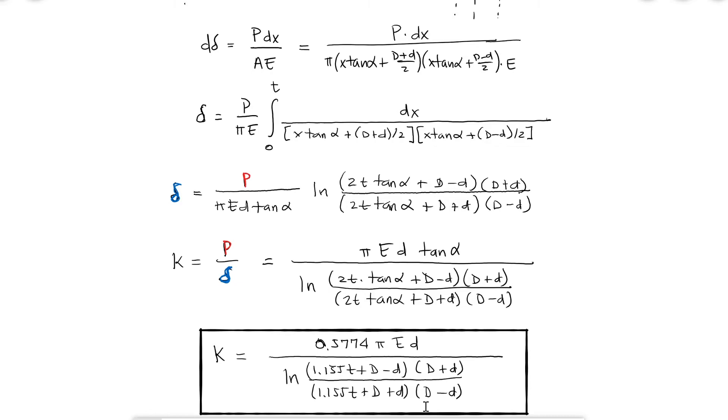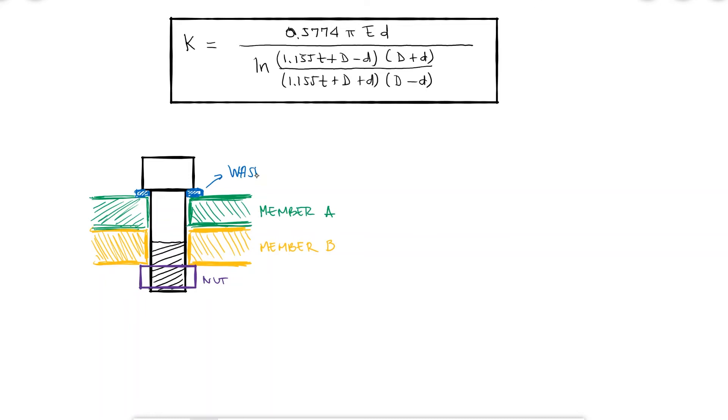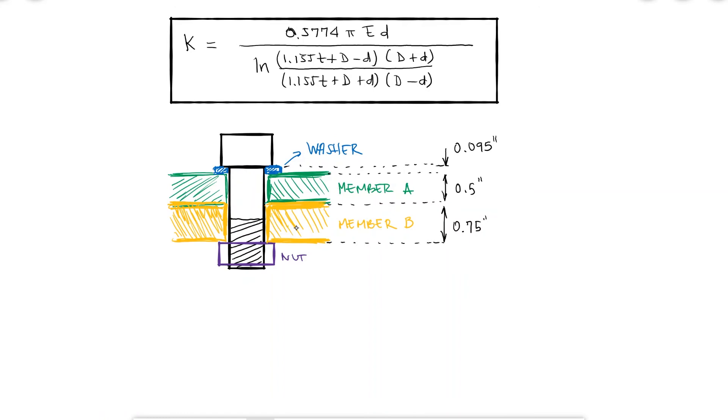What this means is that it's not one stiffness coefficient per member, but for each section. Let's say you have two members and a washer between a bolt head and the nut. The washer is 0.095 inches and the first member is 0.5 inches thick and the other one is 3/4 of an inch.